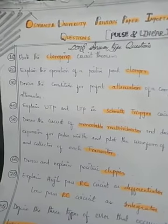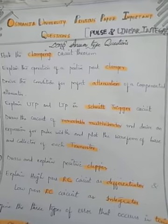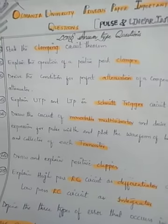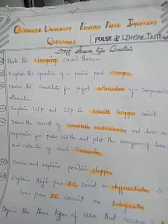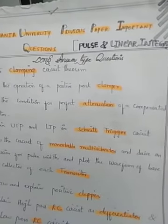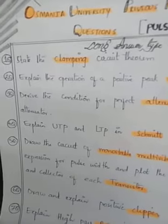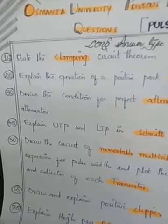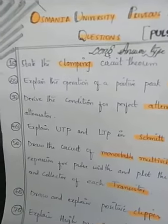The second question is: explain the operation of the positive peak clamper. We have learned about clipper and clamper circuits. You need to explain the operation by giving the input to the clamper circuitry. We discussed positive peak clamper and negative peak clamper — this question requires the positive peak clamper, so write down the relevant points.